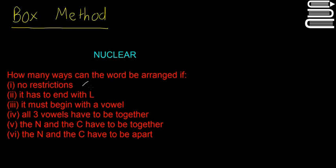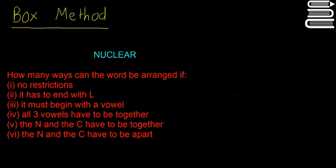The first question asks how many ways it can be arranged if there are no restrictions. Then it asks if it has to end with a certain letter — in this case the letter L — if it has to begin with a certain set of letters, this time a vowel, if all three vowels have to be together, if the N and C have to be together, and if the N and C have to be apart. Six different questions, all requiring slightly different thinking but all using the box method.